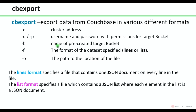CB export is a utility to export data from Couchbase in various different formats. To mention the format, you can use hyphen F, and it will take lines or list as inputs. The lines format specifies a file that contains one JSON document on every line. The list format specifies a file which contains a JSON list where each element in the list is a JSON document.